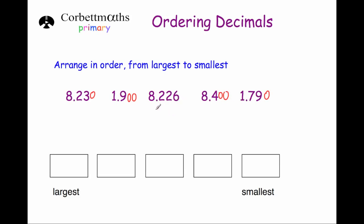Now let's arrange them in order from largest to smallest. Looking at the units column, we've got 8, 1, 8, 8 and 1, so one of the numbers beginning with 8 is obviously going to be the largest. Looking at the tenths column for those, we've got 2, 2 and 4 — so 8.4 is the largest, because it has the largest digit in the tenths column.